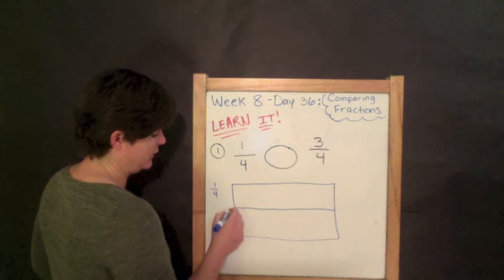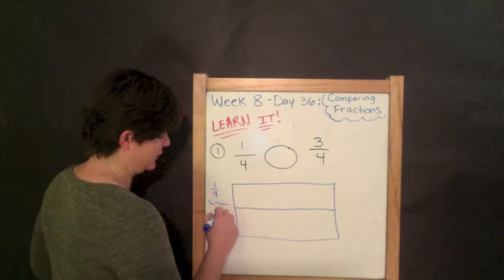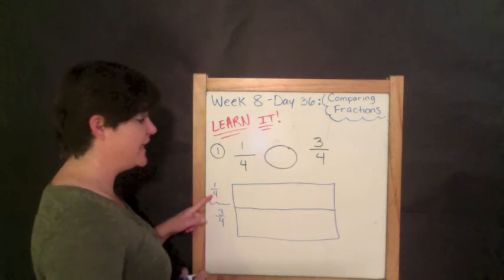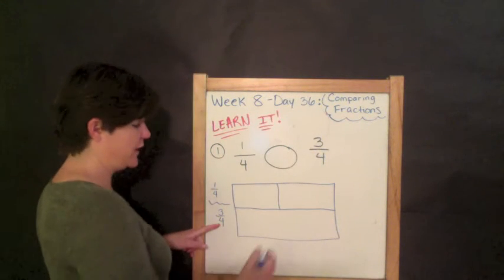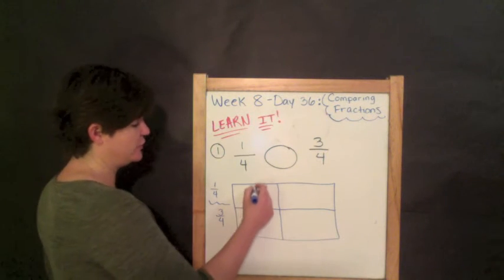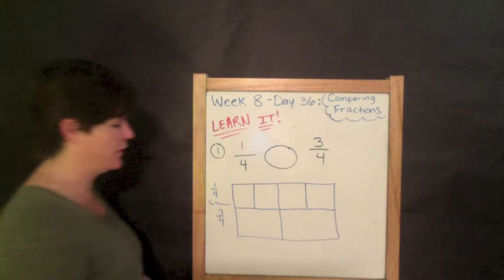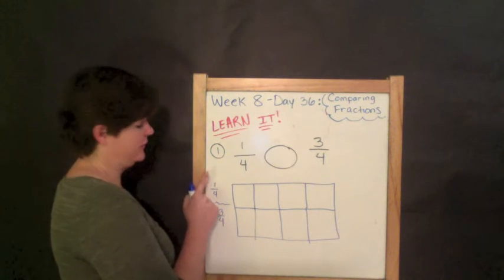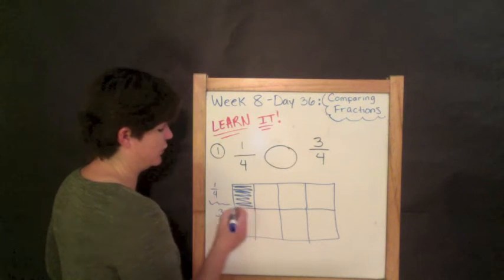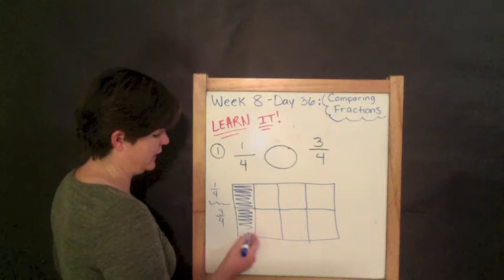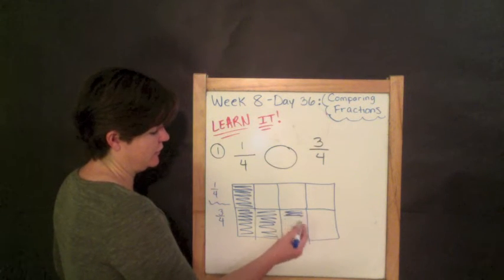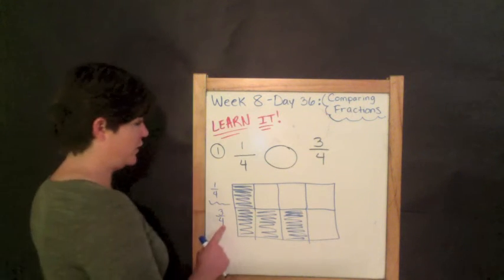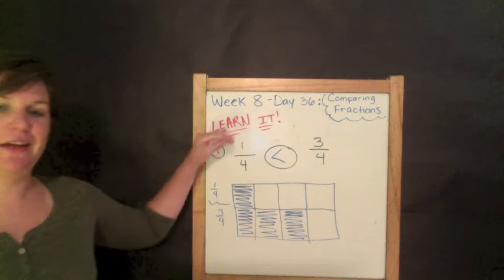Our first fraction up top is one fourth, and down below is three fourths. The denominator is four — it's even — so I can split it in half, then put two on each side to get four equal parts. Same thing down below: split into four parts. My numerator for one fourth is one, so I shade in one part. For three fourths, I shade in three parts. Which one is greater? Three fourths has more area shaded.